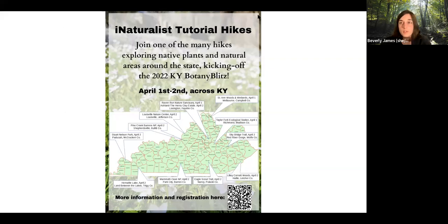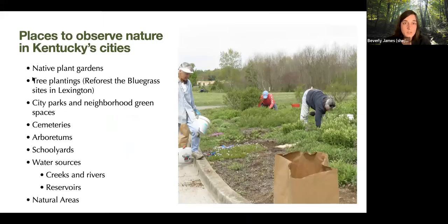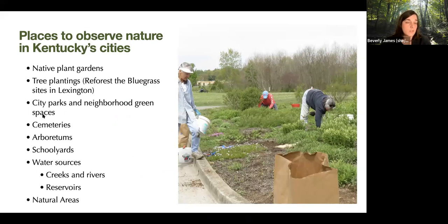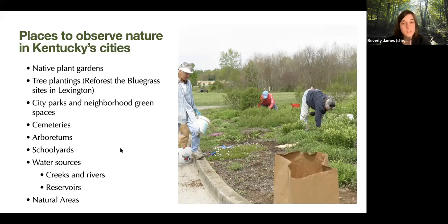If you're looking for places to observe nature in urban areas, consider native plant gardens or tree plantings around town — like the Wild Ones native plant garden at Wellington Park. Other city parks, neighborhood green spaces, cemeteries, arboretums, schoolyards, and water sources like the Kentucky River, Ohio River, and local creeks and reservoirs can be great for birds. Natural areas and farmland can also be really great.